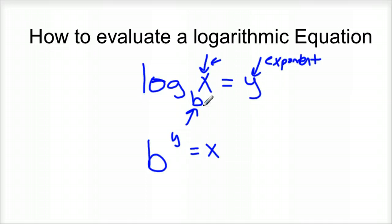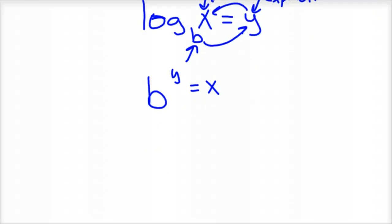B to the Y equals X. We're going in this direction, B to the Y equals X. So that's how you convert from a logarithm to an exponent.